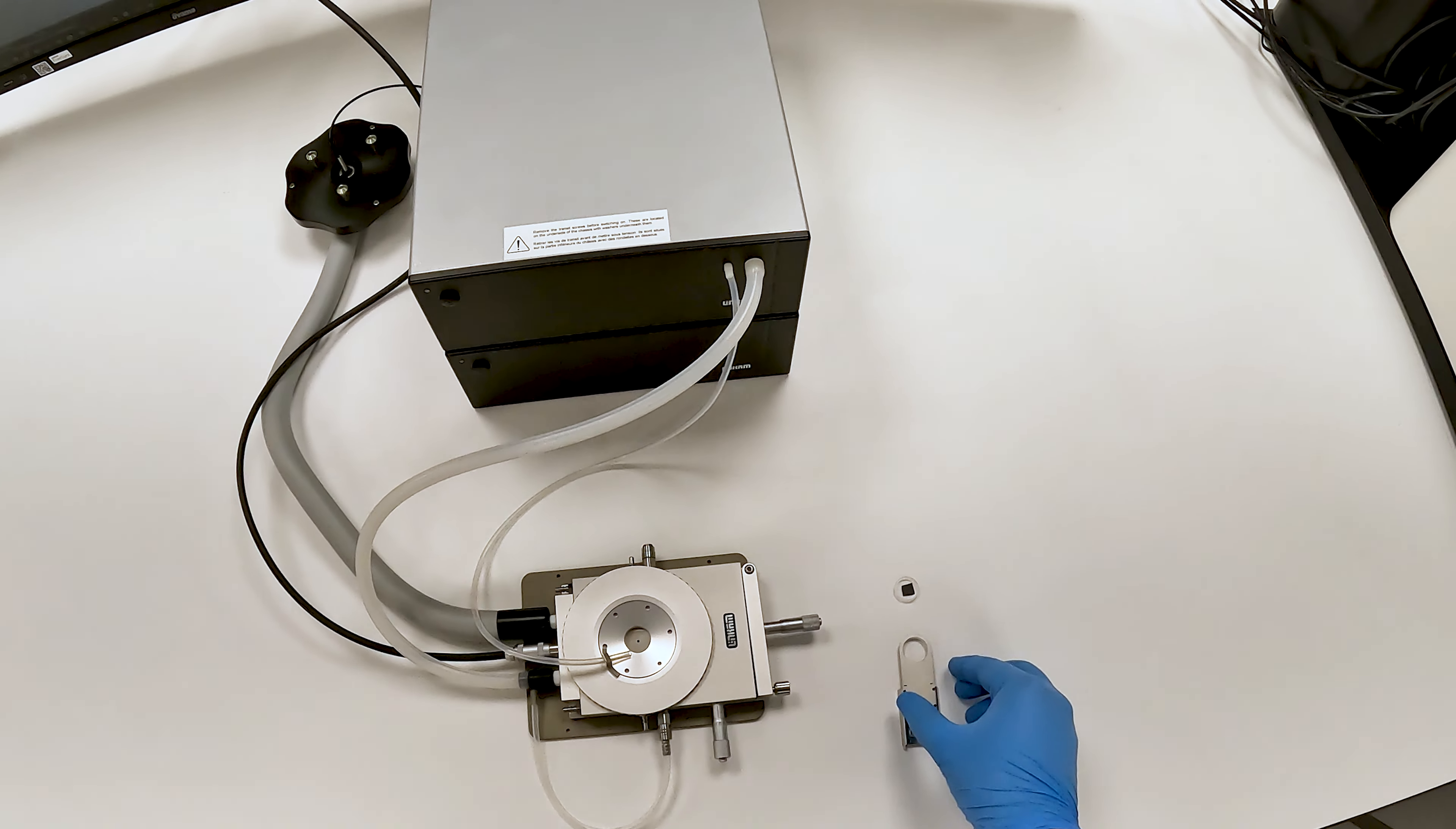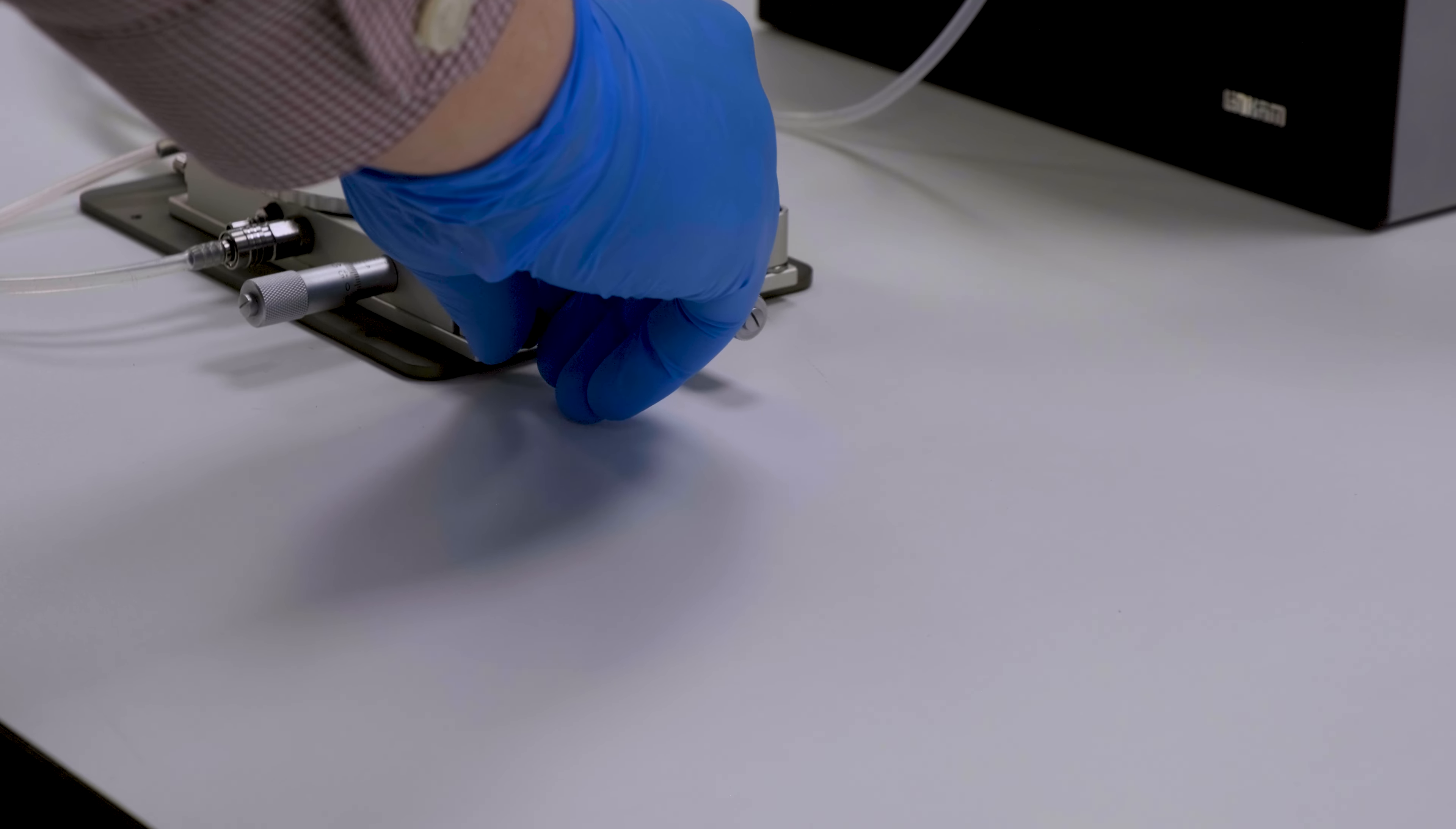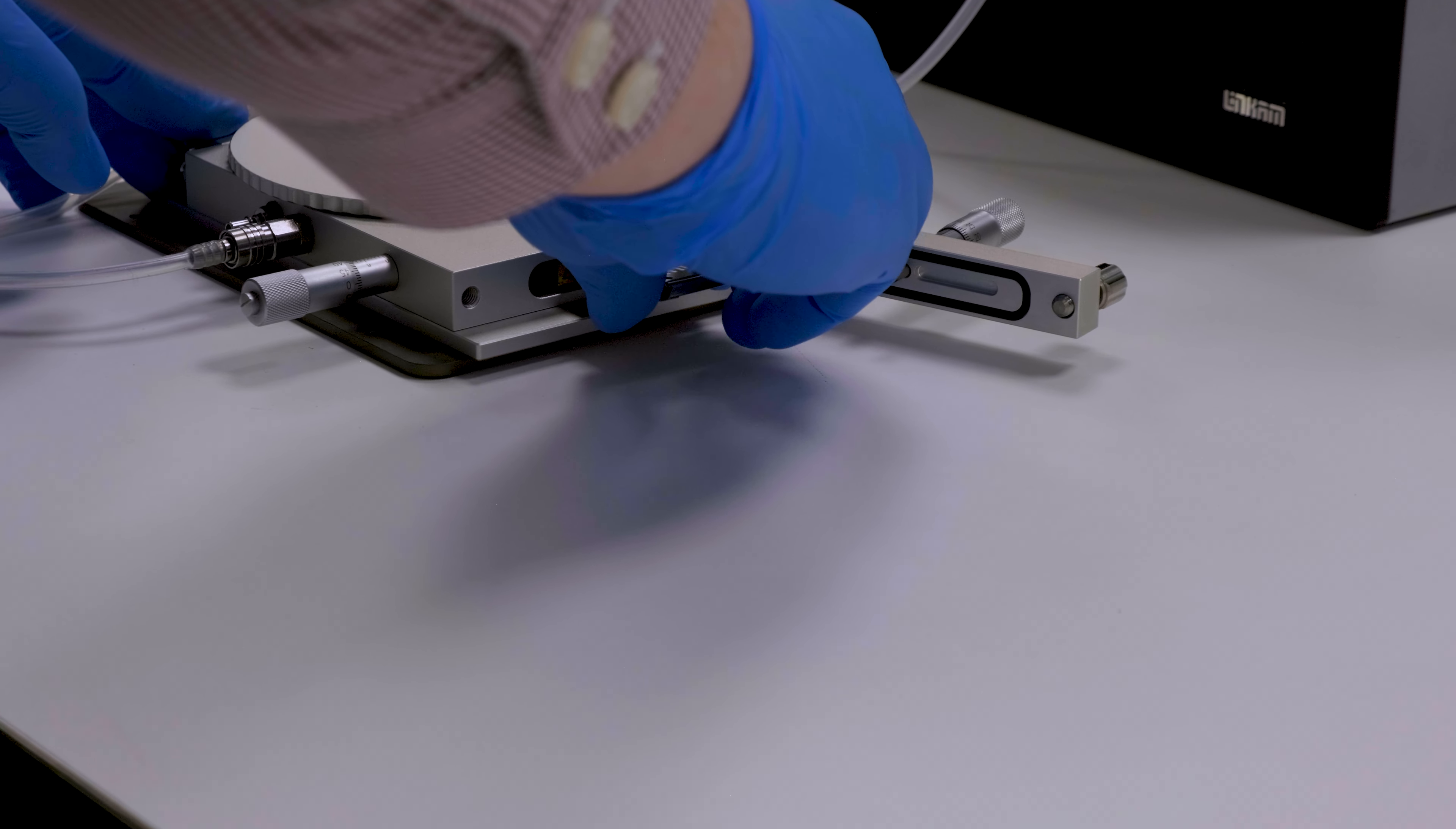The sample can now be loaded into the stage. Among the accessories are quartz sample substrates and a holder to position the sample underneath the microscopy window. In this video, we will be using a silicon chip. Open the door on the side of the stage and insert the sample, then close the door and secure it.